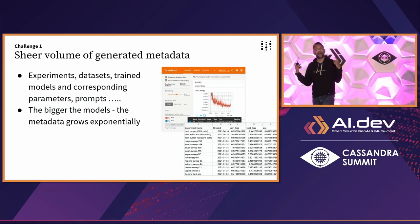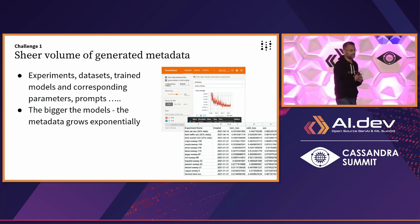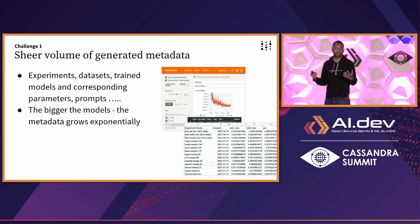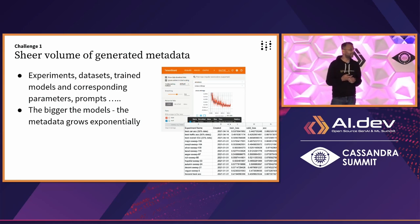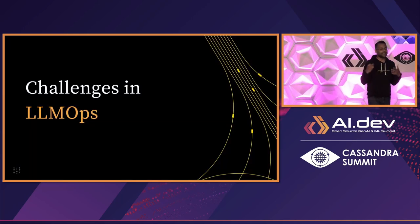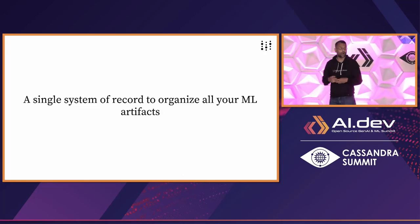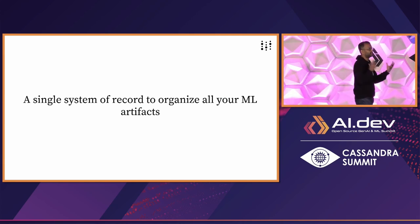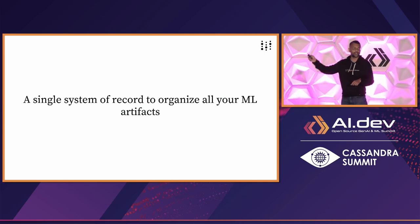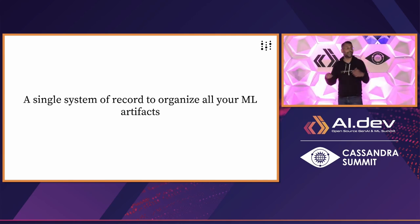In that explosive world, another important development is that multiple types of people are starting to interact with these tools and models directly. These different personas have different languages, different backgrounds, different contexts for why they're using these foundational models. What we probably need to solve this problem is a common system of record that organizes all these different languages and information in one place — so you know which dataset you started your experiment with, which model variation gave you the best results, and which model in production with which prompts achieves the best accuracy.